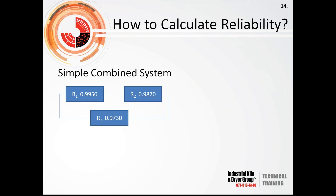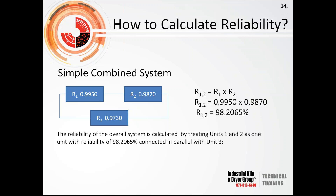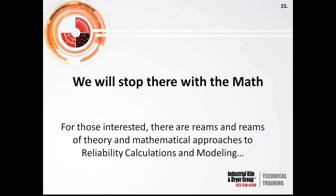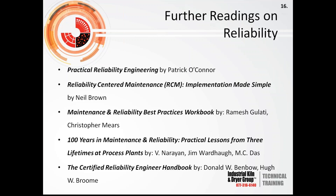In a simple combined system, you have two units running in parallel feeding a third point in the system that is in series with them. You start by calculating the parallel situation and then treat it as a series. Combining them gives an overall reliability of 99.95%. Again, you'd focus on the most reliable component to have the greatest effect. For those interested, there are extensive theories and mathematical approaches to reliability calculations — a few further readings are referenced here.